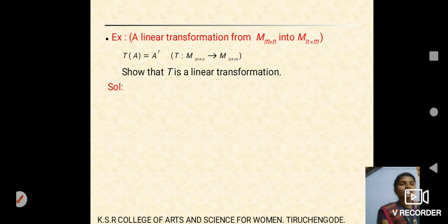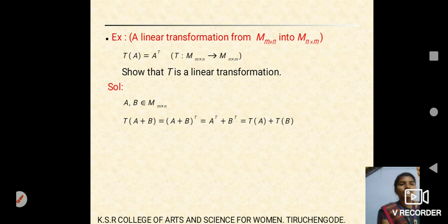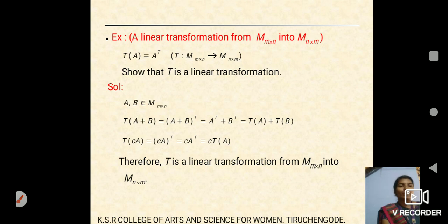Linear transformation from matrix M into matrix M: the domain matrix contains M×N elements and co-domain matrix contains N×M elements. The condition is T(A) = Aᵀ. To verify T is a linear transformation: take any two elements A, B in the matrix, then T(A + B) = (A + B)ᵀ = Aᵀ + Bᵀ = T(A) + T(B). For scalar multiplication, T(cA) = (cA)ᵀ = c·Aᵀ = c·T(A). Both conditions are satisfied, so T is a linear transformation from matrix M into matrix M.